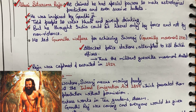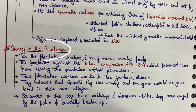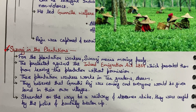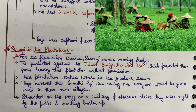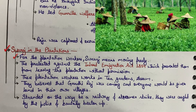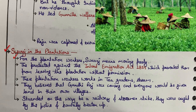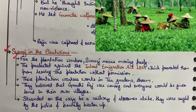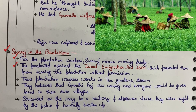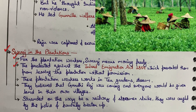The third and last topic is Swaraj in Plantation. The plantation workers who worked in Assam's tea gardens — for them, Swaraj meant moving freely, the freedom to go wherever they wanted to work. They protested against the Inland Immigration Act of 1859, which prevented them from leaving the plantation work without permission.